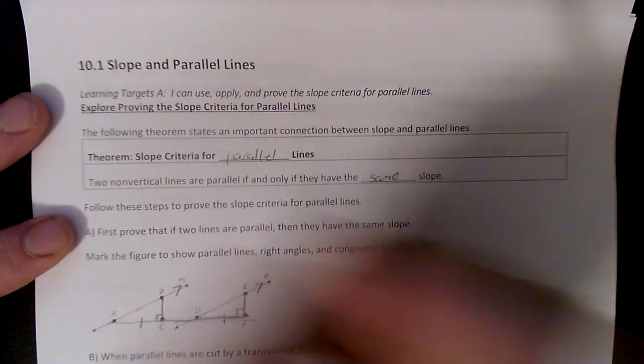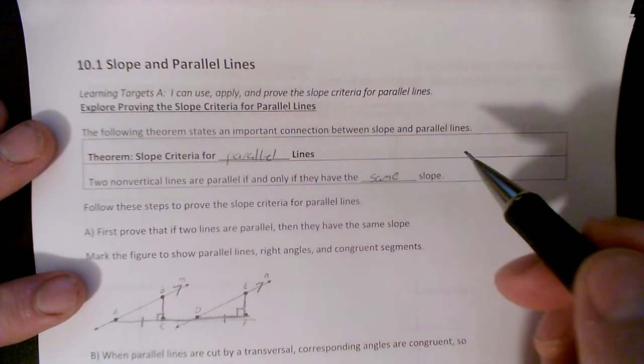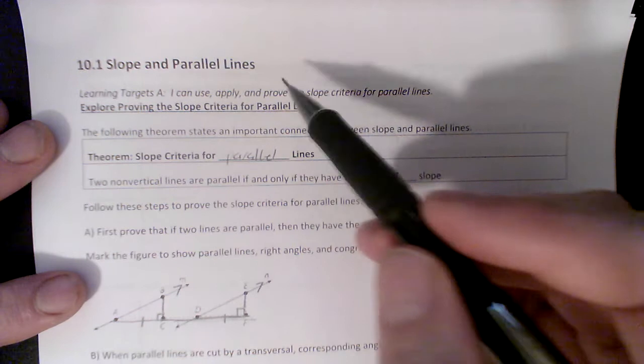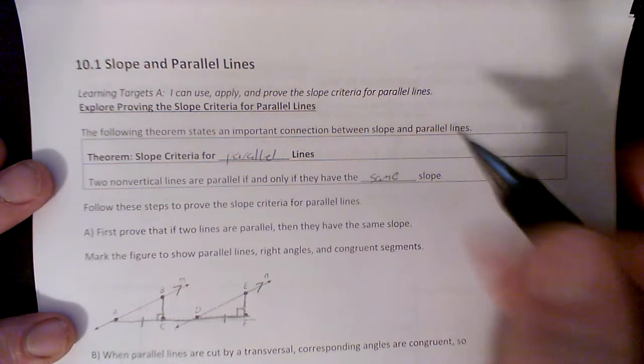Alright you guys, 10.1 is slope and parallel lines. As you can imagine, we just got done with quadrilaterals. We'll be able to prove a lot of things with parallel lines. And if we can get the slopes to match up, then we know the parallel lines exist there.